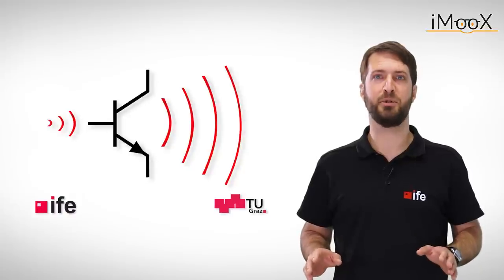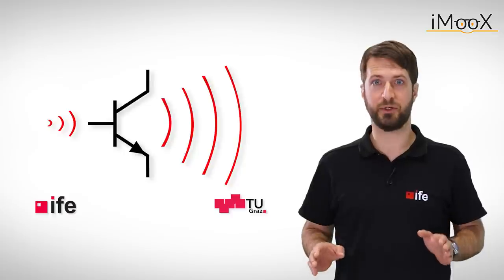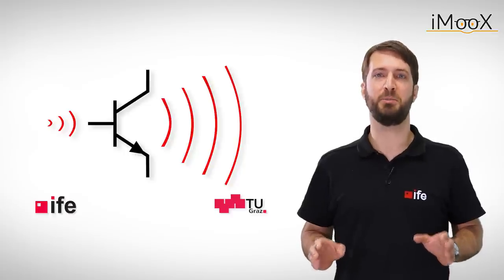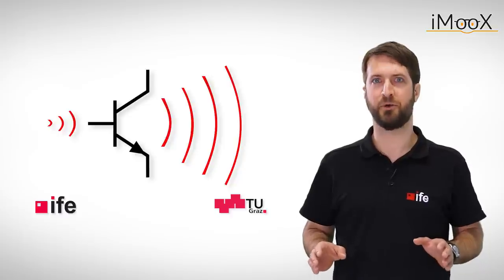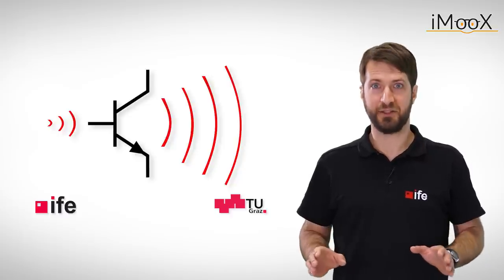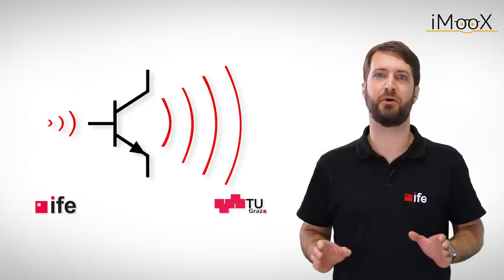Now that we know the basic principle of a transistor it's time to experiment. It is important to understand that the transistor amplifies current only. This way of thinking might feel a little unusual at first. To get a better understanding of what's going on we consider a rather simple circuit called the emitter follower.